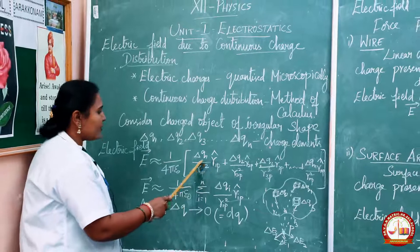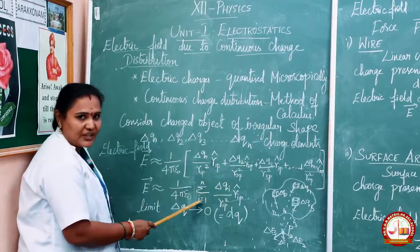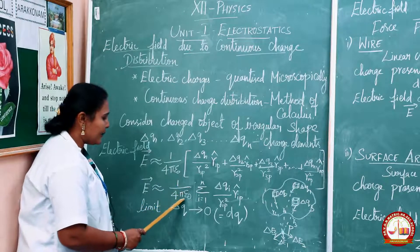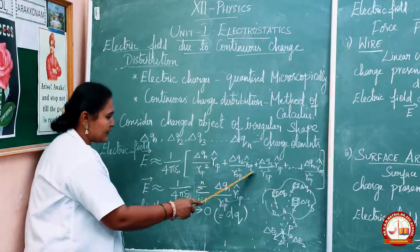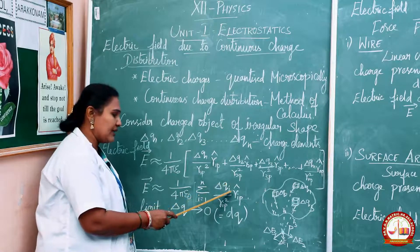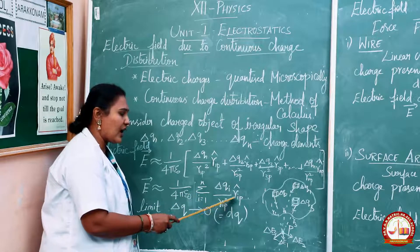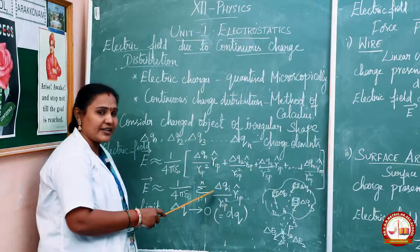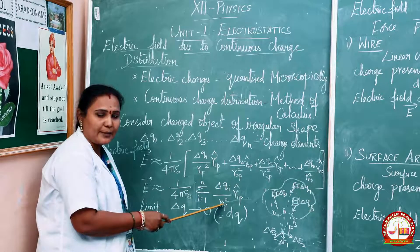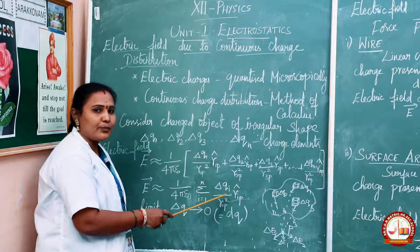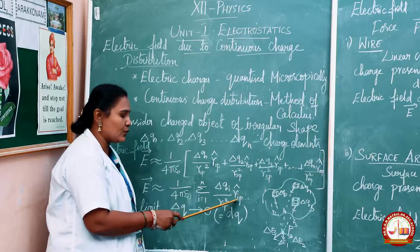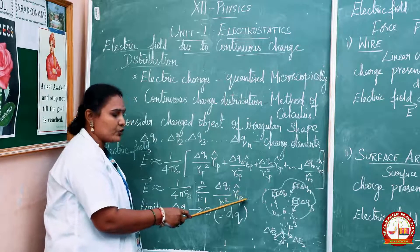Instead of writing individual plus signs, we can use the summation. So E vector is approximately equal to 1 divided by 4πε₀, summation i equal to 1 to n, ΔQi divided by RiP squared, times R̂iP. Here i tends from 1 to n. RiP represents the distance of the point P from the i-th charge element, and R̂iP represents the unit vector from the i-th charge element to the point P.